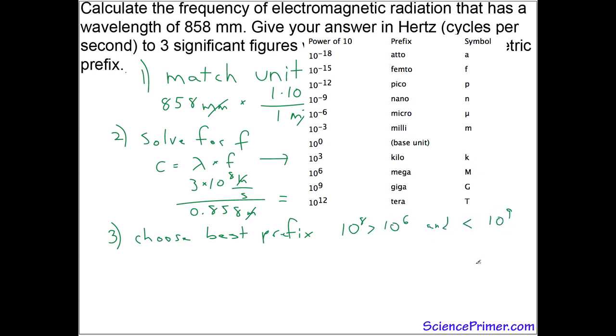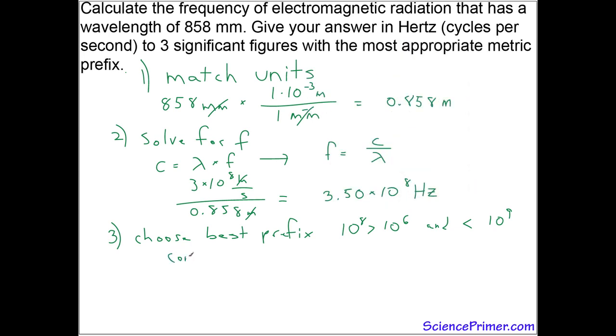So to get a number greater than one but less than a thousand, we want to use ten to the sixth. So the best unit to use is megahertz.